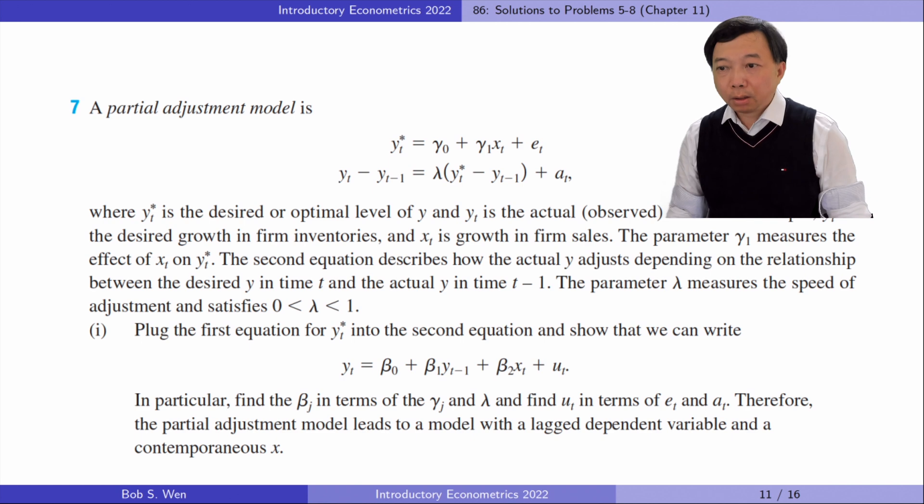In part 1, plug the first equation for y_t^* into the second equation and show that we can write the following equation. In particular, find the beta_j in terms of the gamma_j and lambda and find mu_t in terms of epsilon_t and alpha_t. Therefore, the partial adjustment model leads to a model with a lagged dependent variable and a contemporaneous x.